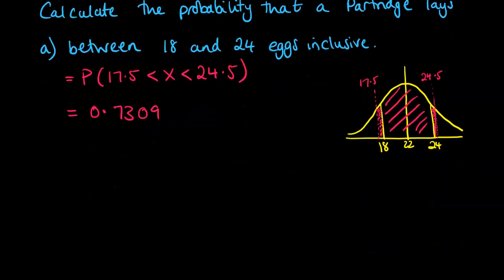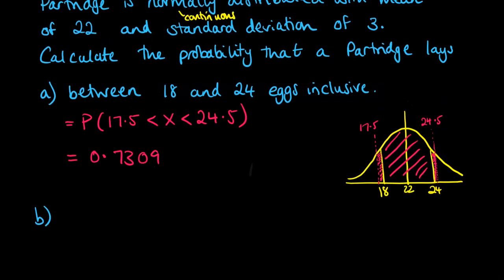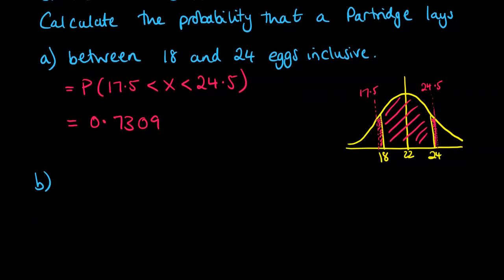We're going to do a few more on this, so that you can see exactly how this works. So part B, calculate the probability that a partridge lays more than 24 eggs.